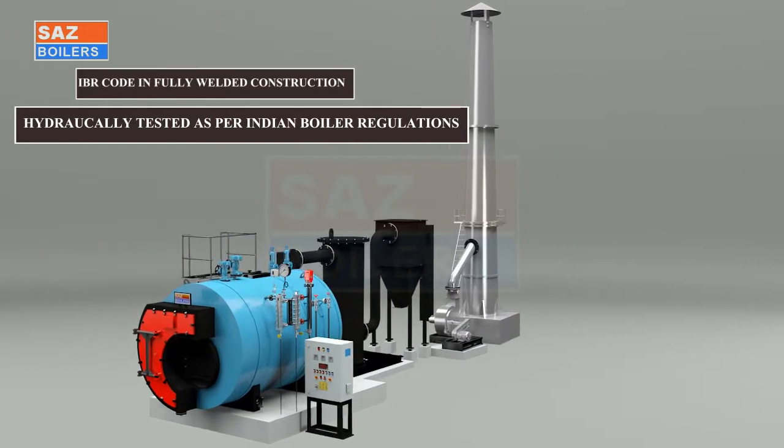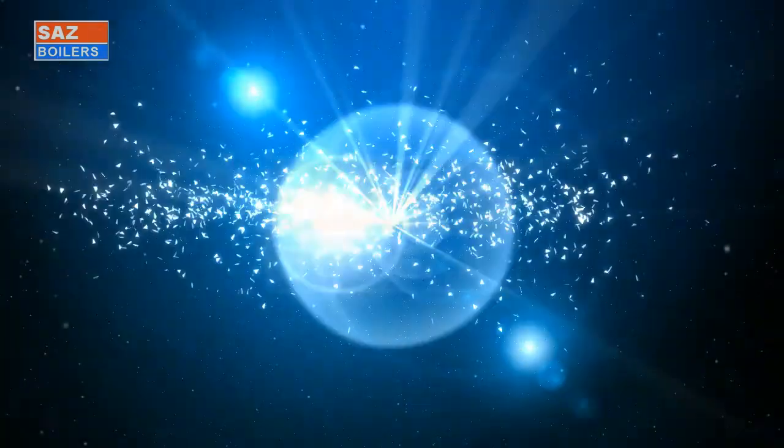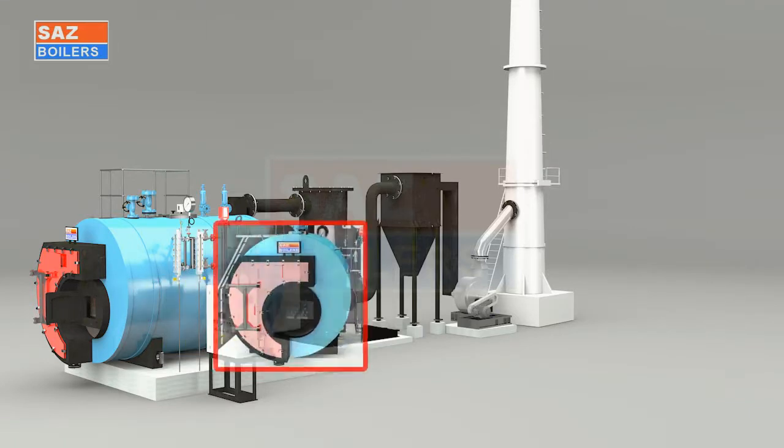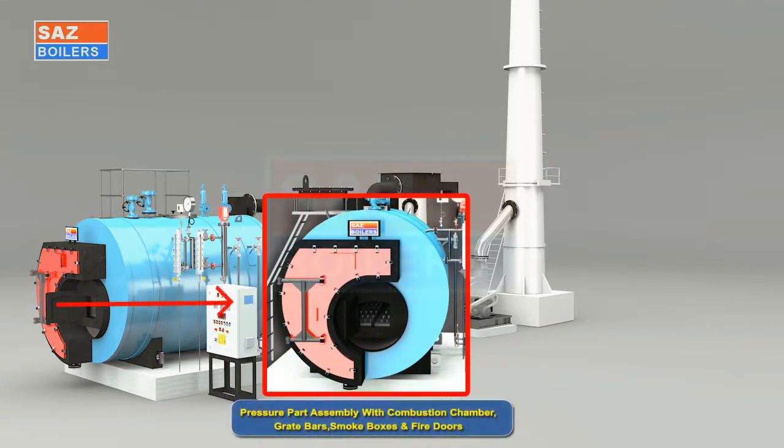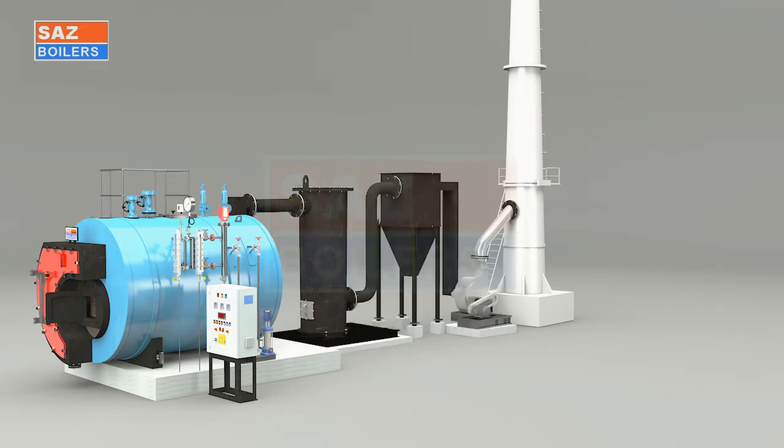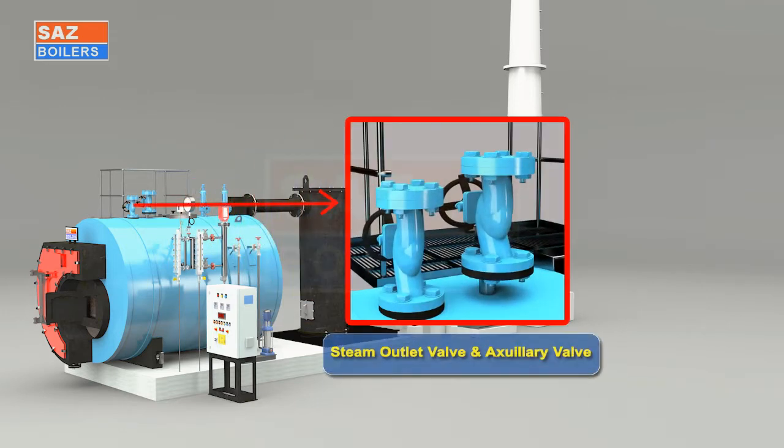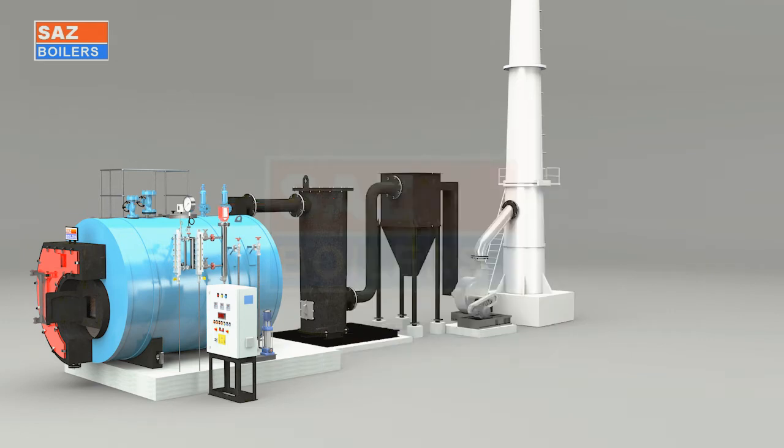Part descriptions: pressure part assembly with combustion chamber, grate bars, smoke boxes and fire doors, boiler water level indicators, water level controller, feed water pump with drive motor, pre-wired control panel box, steam outlet valve and auxiliary valves, steam pressure gauge, steam safety valves, air preheater or economizer, multi-cyclone dust collector.